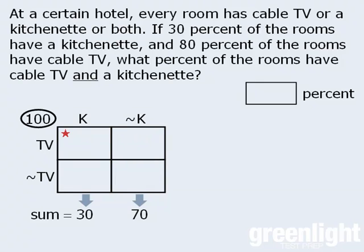Moving along, the question also tells us that 80% of the rooms have cable TV, so the sum of these two boxes must be 80% of 100, which is 80.